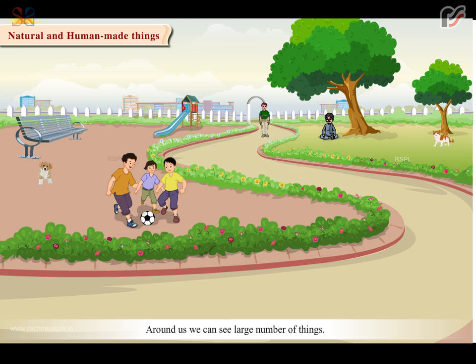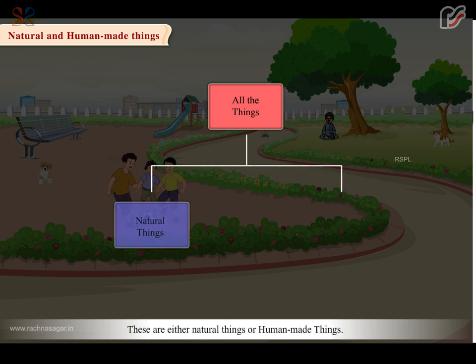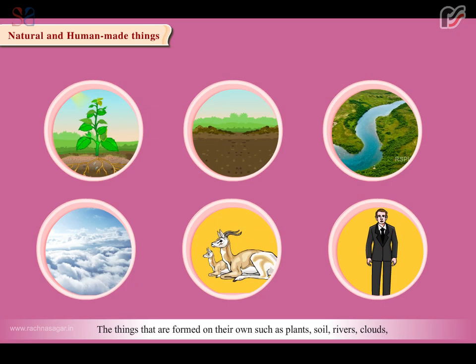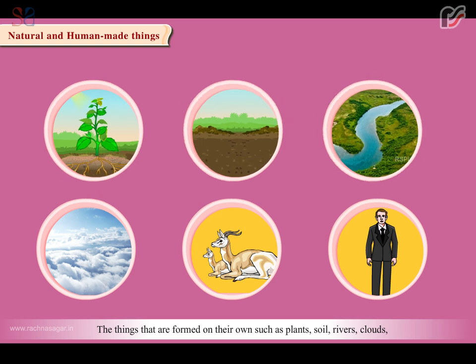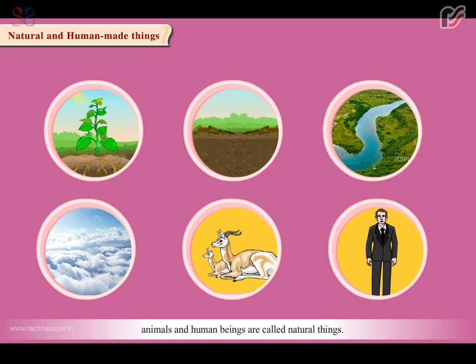Around us, we can see a large number of things. All the things can be categorized into two groups: these are either natural things or human-made things. The things that are formed on their own, such as plants, soil, rivers, clouds, animals and human beings, are called natural things.